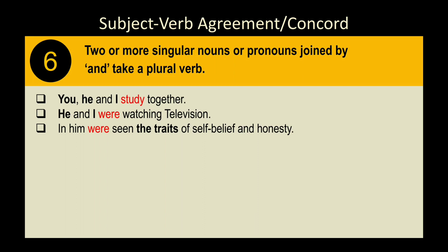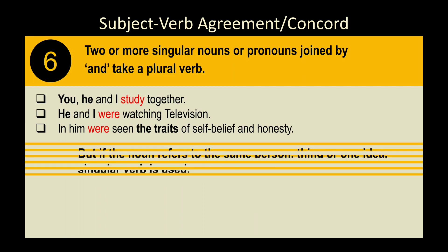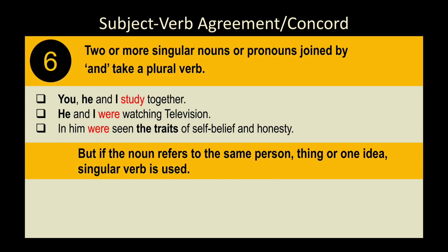Rule 6: When two or more singular nouns or pronouns are joined by 'and,' they take a plural verb. Examples: 'You, he, and I study together.' 'He and I were watching television.' 'In him were seen the traits of self-belief and honesty' — self-belief and honesty are joined by 'and,' so plural verb 'were' is used.